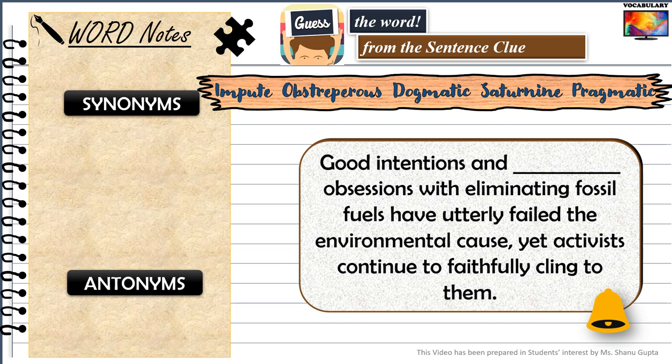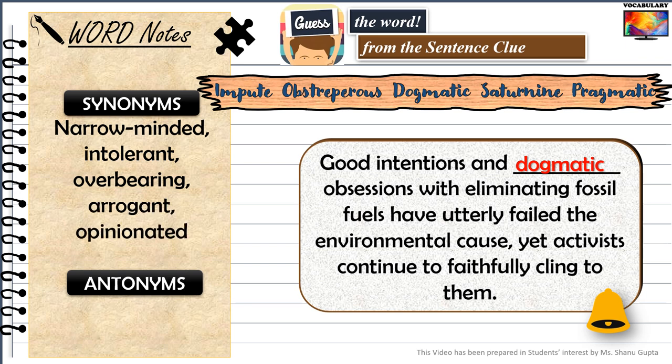'Good intentions and dogmatic obsessions with eliminating fossil fuels have utterly failed the environmental cause. Yet activists continue to faithfully cling to them.' The word that goes into this blank is dogmatic. Synonyms include narrow-minded, intolerant, overbearing, arrogant, and opinionated. Antonyms would be low-key, tentative, and open-minded.